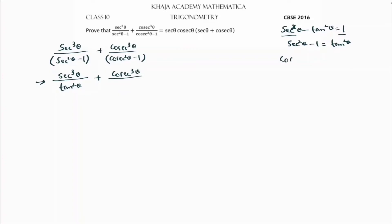I will use another identity: cosec²θ - cot²θ = 1, so cosec²θ - 1 = cot²θ.